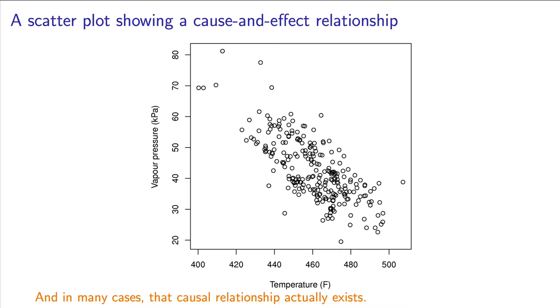Chemical engineers know that, in general, the vapor pressure of a species in a distillation column will decrease as temperature increases. This is confirmed in this particular plot, which shows data from an oil and gas company in Canada.